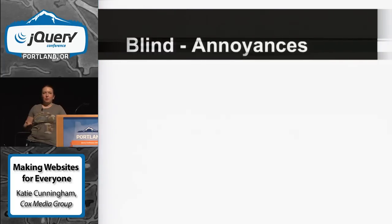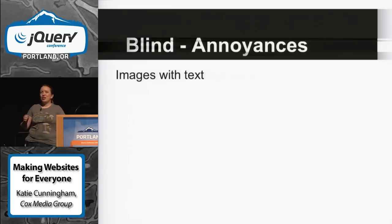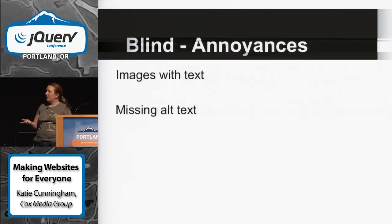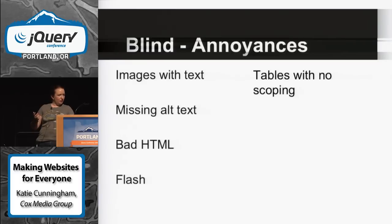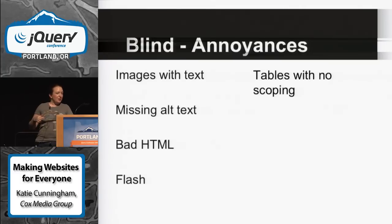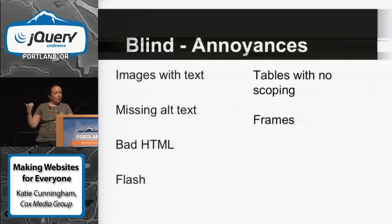Some of the annoyances that the blind deal with: images with text — screen readers cannot read text in images. Missing alt text, which we'll go over. Bad HTML. Flash is extremely annoying — I almost got kicked out of a bar arguing about Flash not being accessible. Tables that don't have scoping, frames, repetition, and modals.